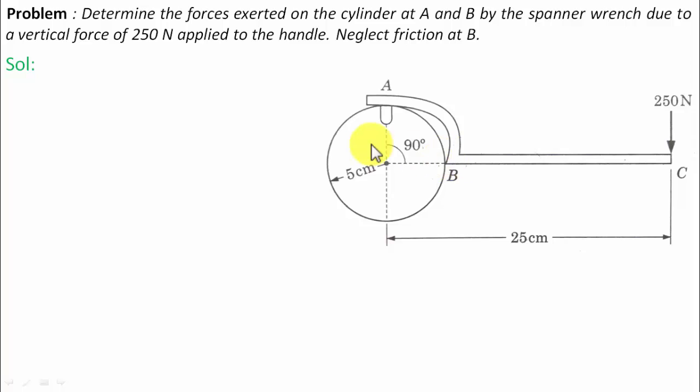Now let us try to understand this arrangement. There is a nail inside a cylinder which is to be pulled out by a spanner wrench, and this is the position when you grip the nail head with the spanner.